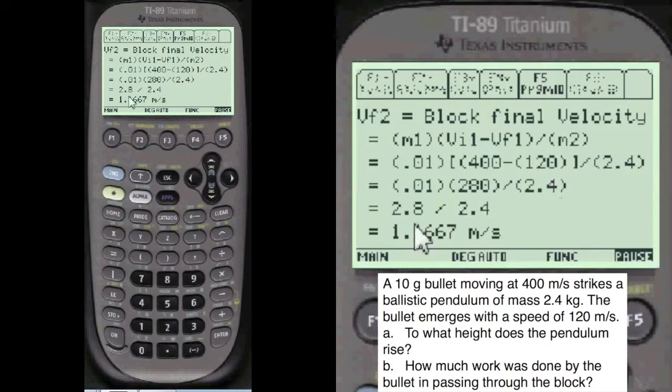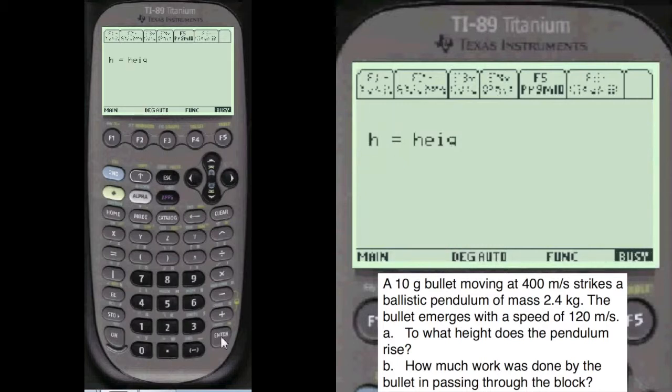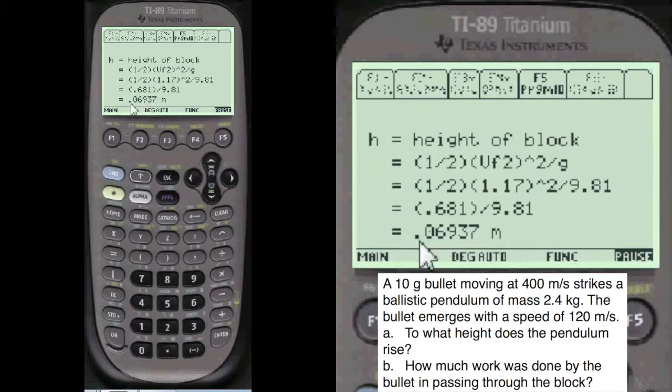You have to find the final velocity of the bullet first, or the block first. 1.1667 meters per second. And the height of the block is 0.06937 with the proper formula here.